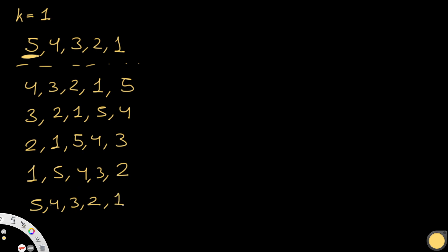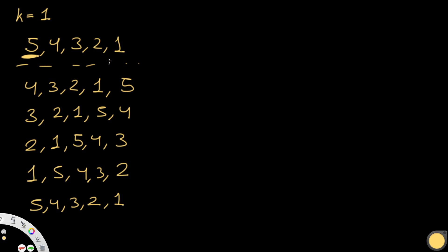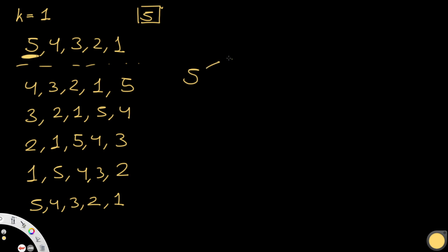These are all the combinations we have — we're never going to have more. So what we do is get all of these and find whichever is the lexicographically smallest. Whatever is closest to ascending order would be the best answer. The number of combinations is going to be whatever the length of the input is — so here, 5 possibilities. Basically what this is saying is when k is equal to 1, we're looking at a circle. 5 points to 4, to 3, to 2, to 1, and back to 5.